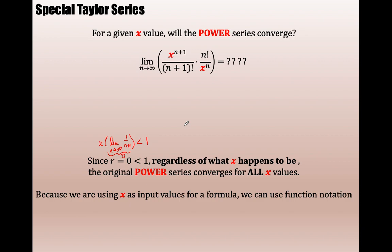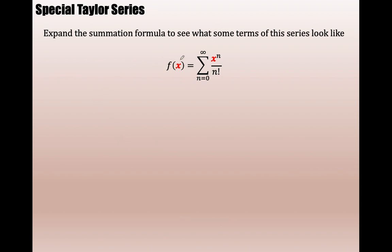Further, because we're using x as input values — put in 2, 1, 7, 2.3, a million for x — we can use function notation. No matter what number you put in for x, you will get a convergent numeric series. Now let's expand this summation formula like we did in the warm-up to see what this looks like with the x in it. Plug in zero and you get 1; plug in 1 and you get x to the first over 1 factorial; plug in 2 and you get x squared over 2 factorial; plug in 3 and you get x cubed over 3 factorial.